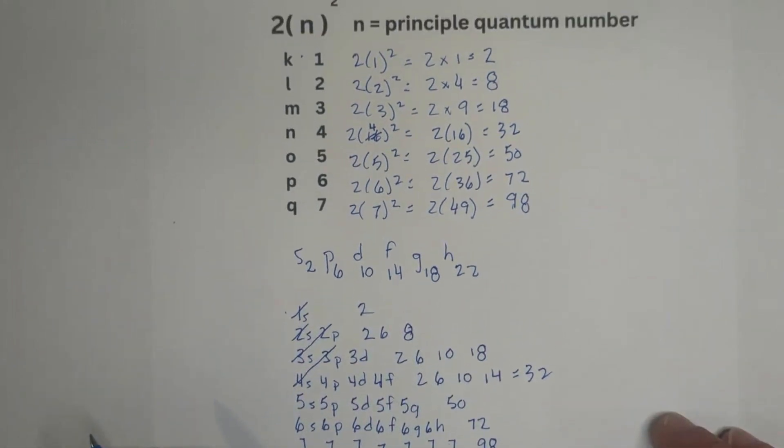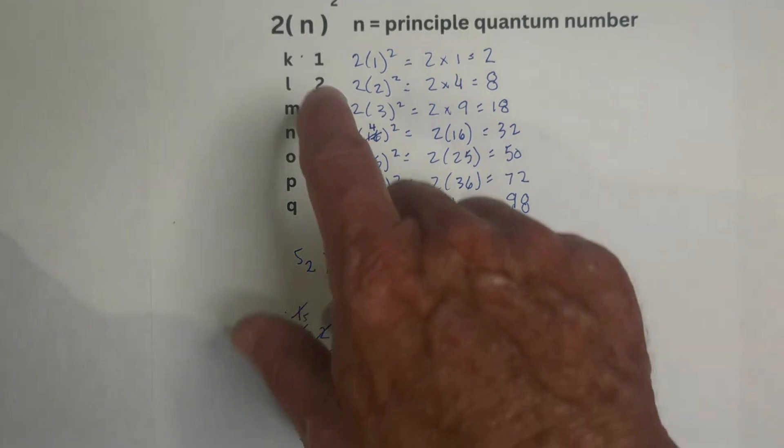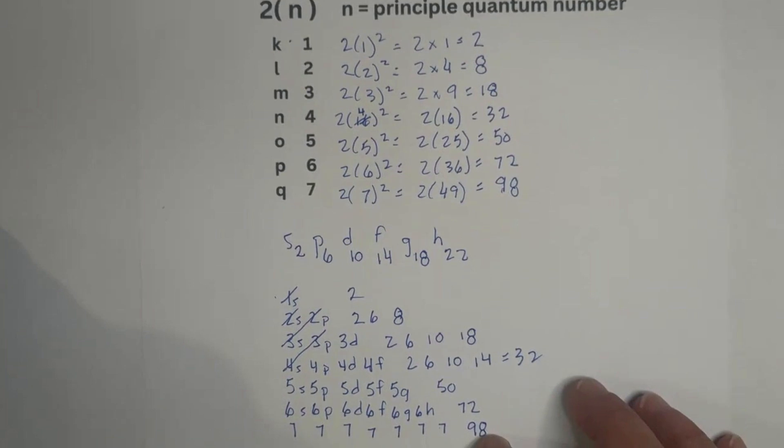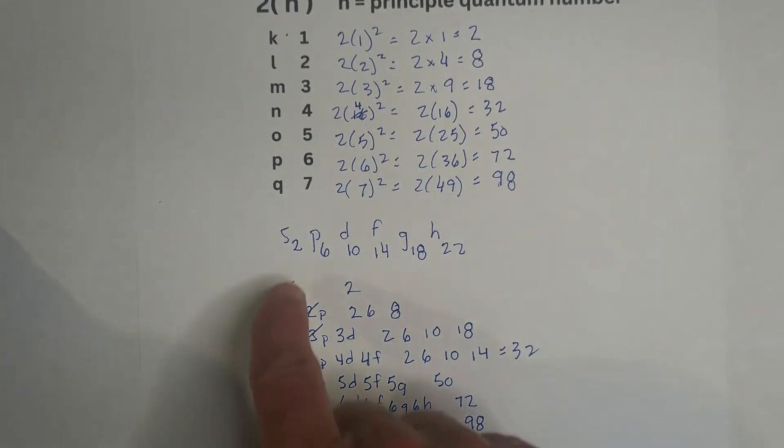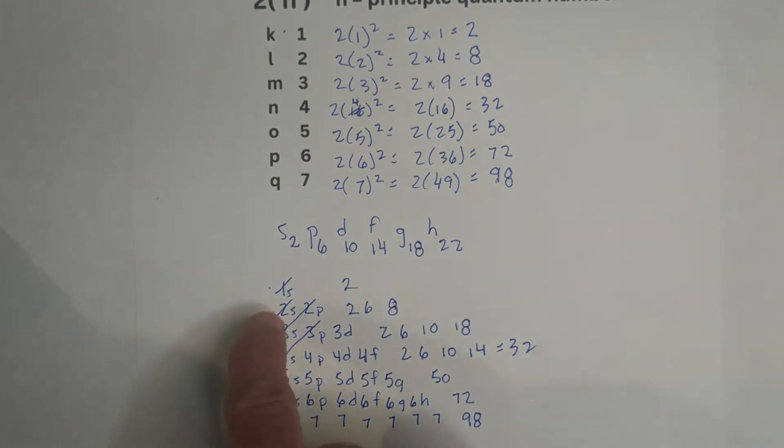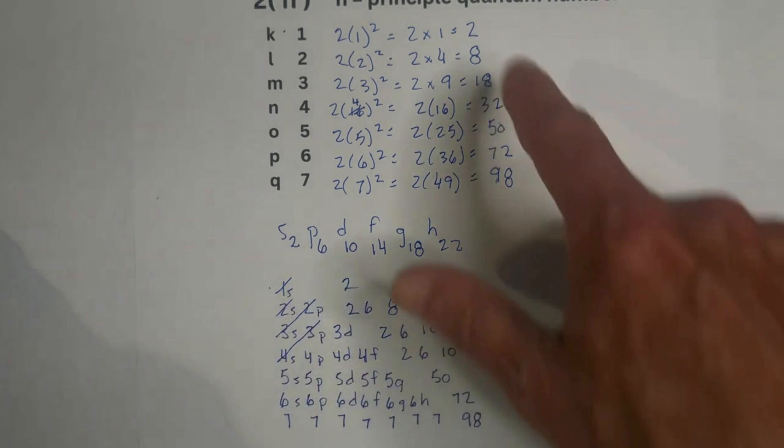So, again, I just wanted to show you for each energy shell, you can use the formula two N squared. And then also, you get a little idea, because remember, in each shell, you have different orbitals. And each orbital can hold a different number of electrons. And then you can use this chart to come up with the same numbers.